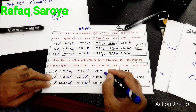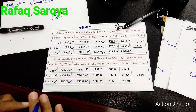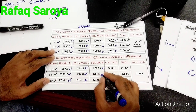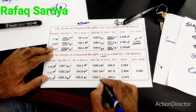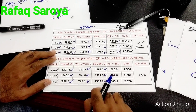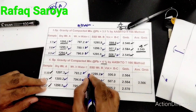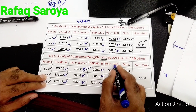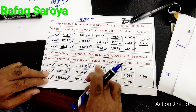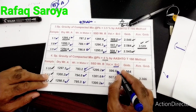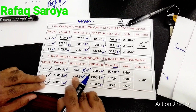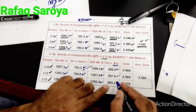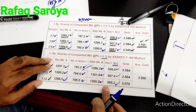We take out the samples and measure their SSD weights. For the first sample 1299.2, for the second 1301.6, and for the third 1300.2. Subtracting weight in water (C) from SSD weight (B) gives the volume: B minus C equals 506.0 for the first, and 507.0 and 505.2 for the others.